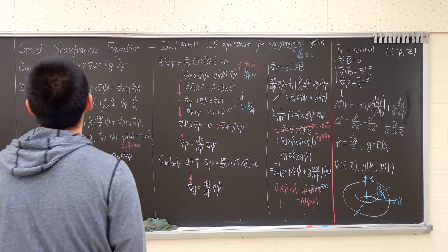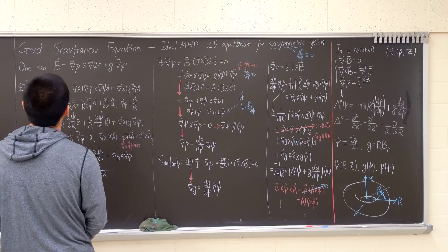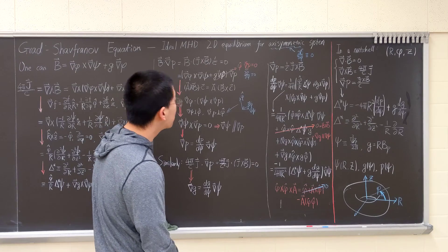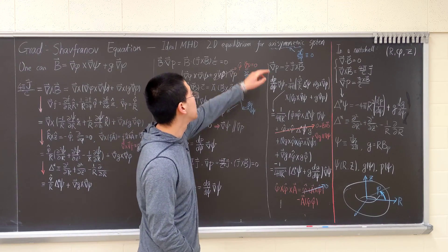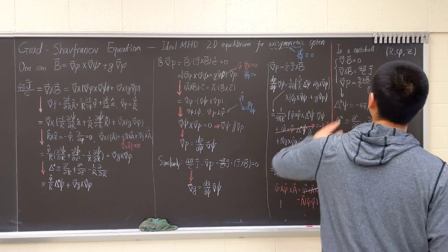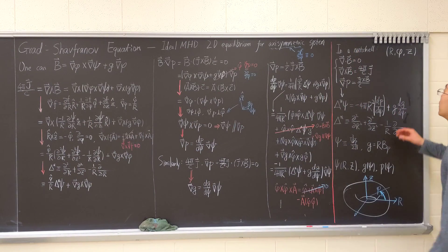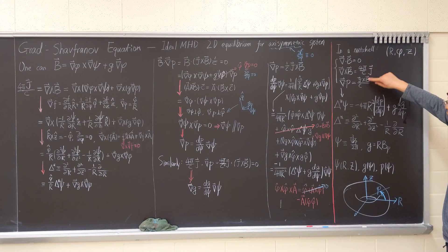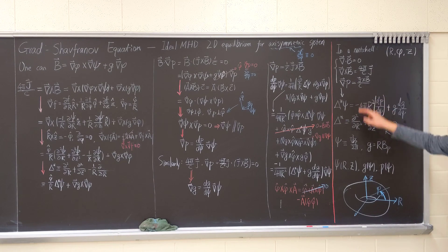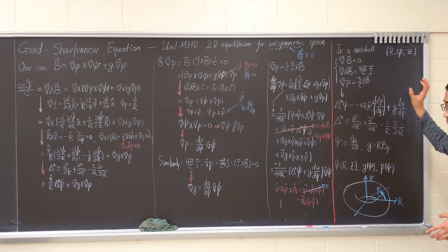Let me try to derive the Grad-Shafranov equation. It's a 2D equilibrium for an axisymmetric system for ideal MHD. It's very practical. In a nutshell, we're dealing with three equations: two Maxwell's equations and a force balance. You can check that out in the first moment of the MHD equation. It's a pressure gradient balanced out by the vessel-oriented force.